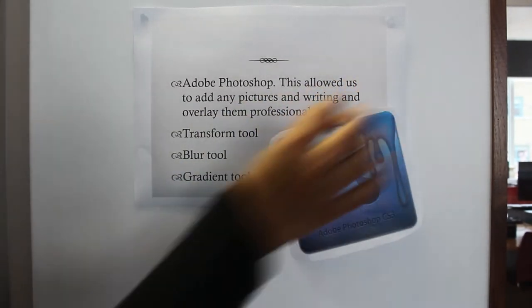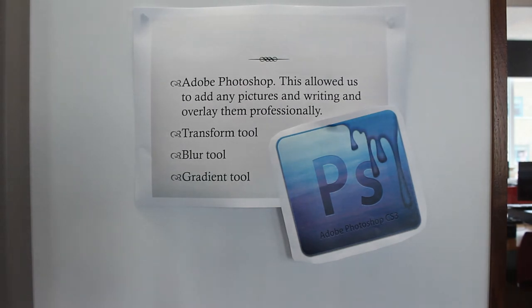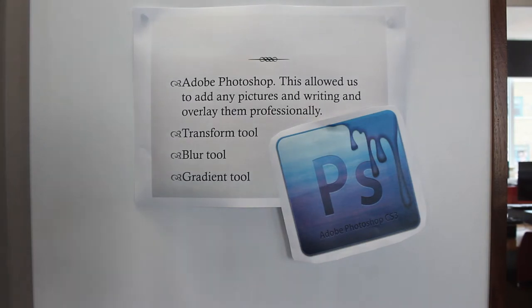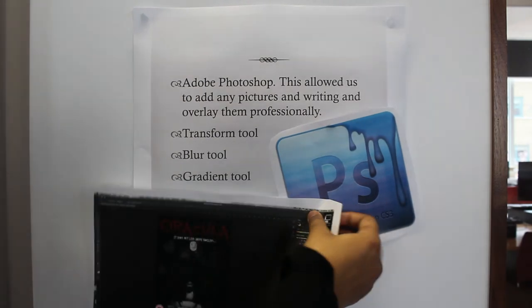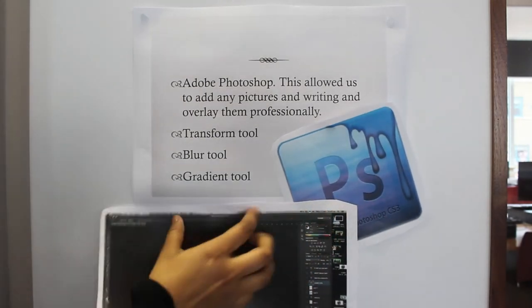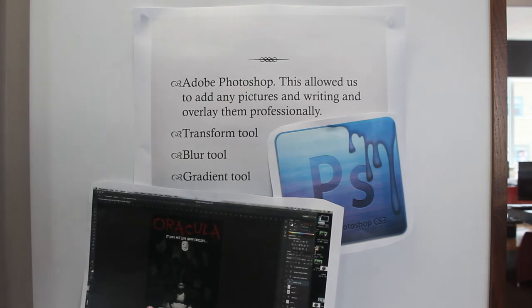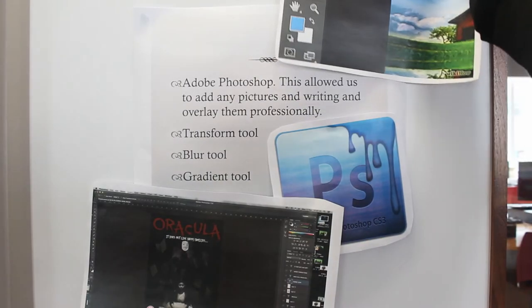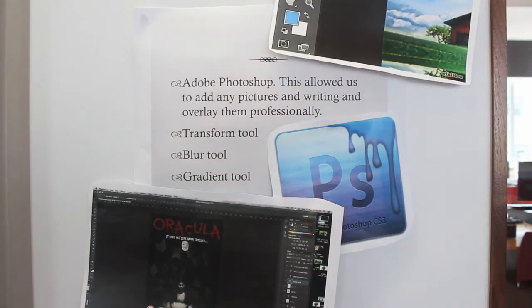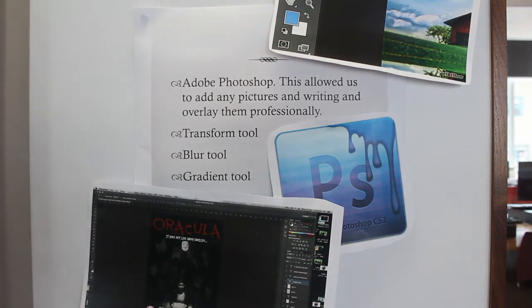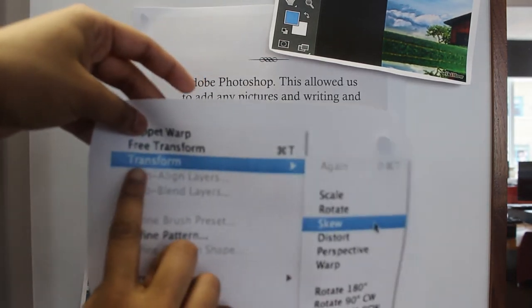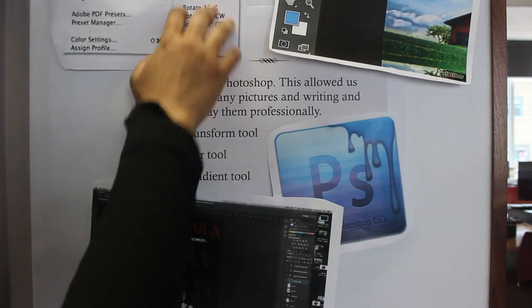For the poster we used Adobe Photoshop. This allowed us to add pictures and writing and overlay them professionally. We used the transform tool to edit and enlarge pictures and text, placing them wherever we want. We also used the blur tool to smudge a specific picture pasted on the page so it looks part of the poster. The gradient tool was also good as it was an easier and faster way to smudge a pasted picture.